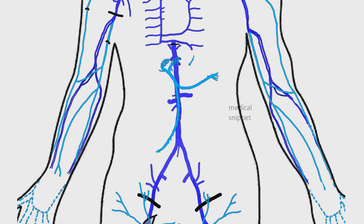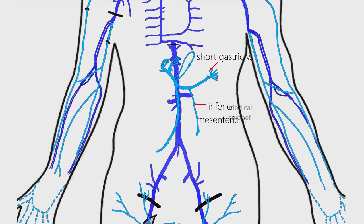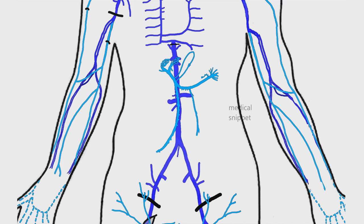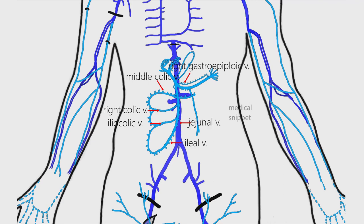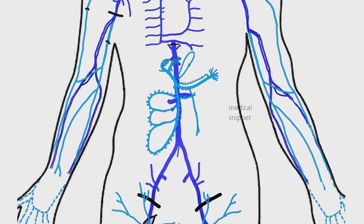The trunk of the portal vein receives the left and right gastric veins. The inferior mesenteric vein drains into the splenic vein. The other tributaries of the splenic vein are short gastric veins, pancreatic veins, and left gastroepiploic vein. The tributaries of the superior mesenteric vein are the right gastroepiploic vein, middle colic vein, right colic vein, and ileocolic vein. The ileal and jejunal veins also drain into the superior mesenteric vein. The tributaries of the inferior mesenteric vein are the left colic vein, sigmoidal vein, and superior rectal vein.